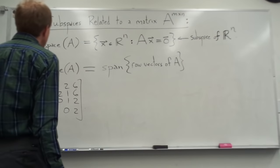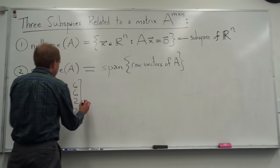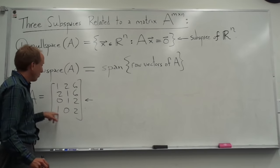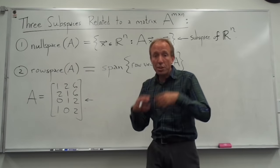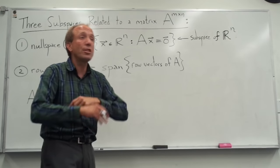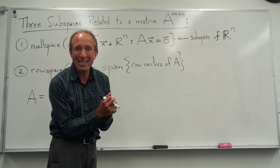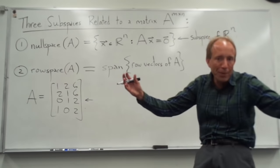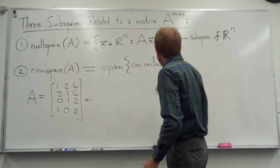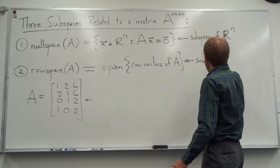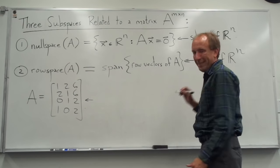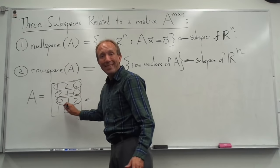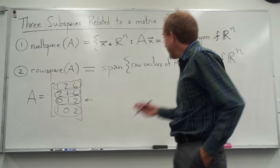The row space of A is the span of these four rows: (1,2,6), (2,1,6), (0,1,2), and (1,0,2). Because it's the span of something, anytime you take the span of anything you always get a subspace — that's why we call it the row space. It's a subspace of R^n because there are n columns, which means each row has n slots.